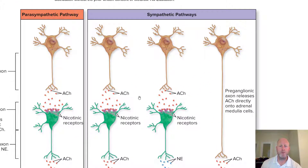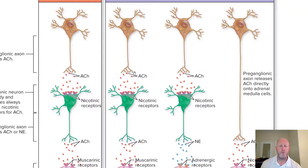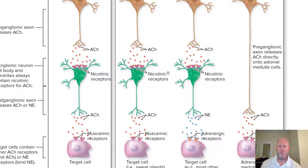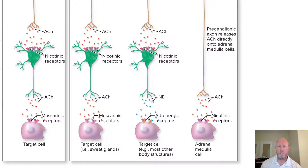In the sympathetic pathways, we have acetylcholine binding the nicotinic receptors, and then either acetylcholine or norepinephrine is released. With acetylcholine being released, it binds the muscarinic receptors. If norepinephrine is released, it binds the adrenergic receptors. That's always the case: norepinephrine with adrenergic receptors, and acetylcholine with muscarinic receptors.